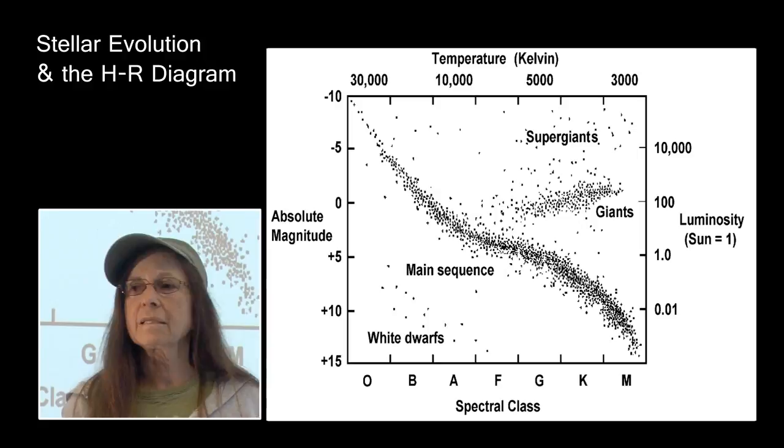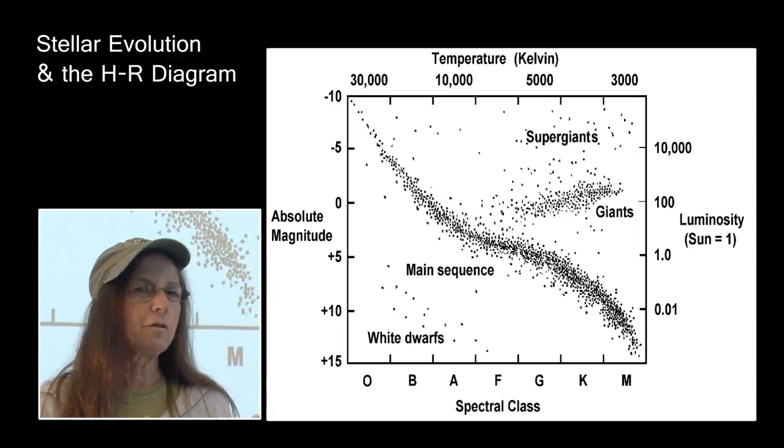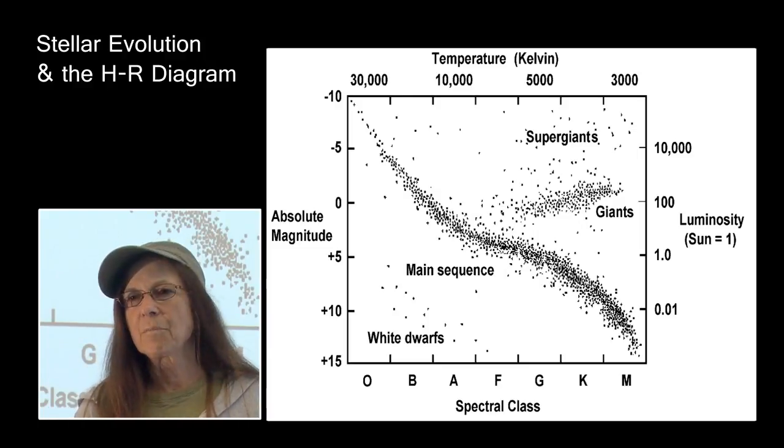Well, the same thing takes place with the HR diagram. It is a plot of absolute magnitude versus temperature. At the top we have temperature. At the bottom we have the spectral class.